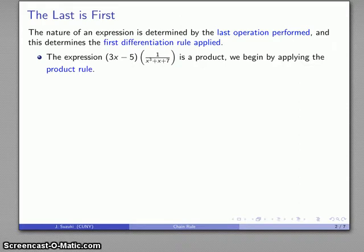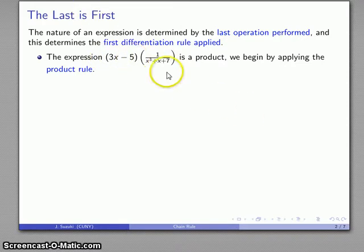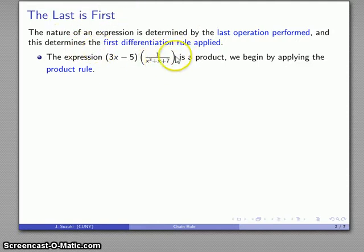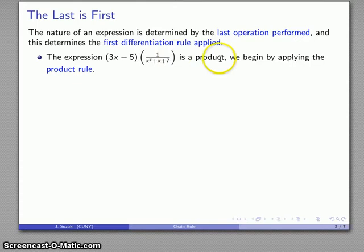For example, consider the expression (3x − 5) · (1 / (x³ + x + 7)). If I evaluate it, I take x times 3 minus 5, hold it, take x³ + x + 7, take 1 over that, hold it, then multiply those two values together. The last thing I do to evaluate this expression is multiply, so this expression is a product, and the derivative rule I start with is the product rule.